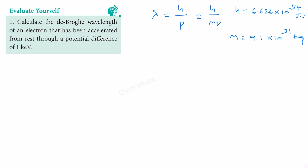What is the velocity of the electron here? That is not given directly in this question — it is mentioned in an indirect manner which we need to figure out. An electron that has been accelerated from rest through a potential difference of one kilo electron volt means that when we don't apply any potential difference, the electron is at rest and its velocity is zero.